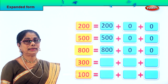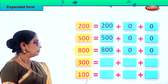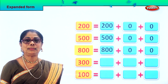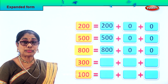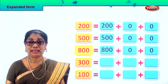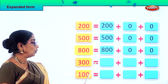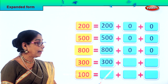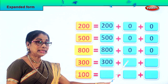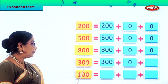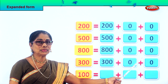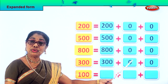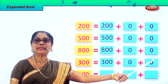Next you have three hundred — zero in the ones place, zero in the tens place, three in the hundreds place. So we expand three hundred as three hundred equal to three zero zero, three hundred plus zero tens plus zero ones. Three hundred is equal to three hundred plus zero ten plus zero one.